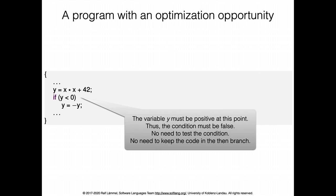Here is a simple motivation for abstract interpretation. Look at this simple imperative program — completely silly, but enough to make the point. Without knowing the value of x — x might even be a program variable that is part of the input only provided when we actually run the program — nevertheless we know for sure that the value of y at this point must be positive, just by basic arithmetic reasoning. Because it's positive, we never actually need to do this test, and so we can already save on the test.